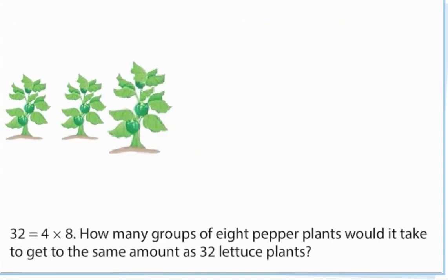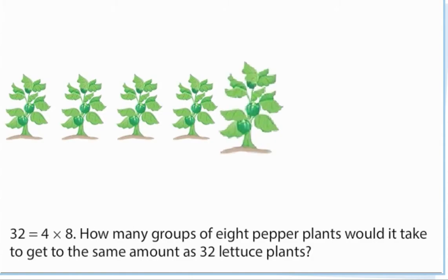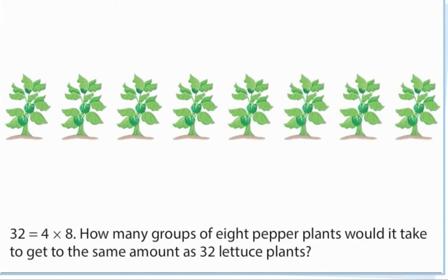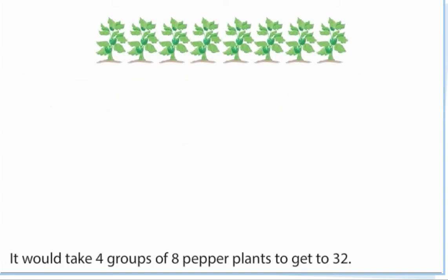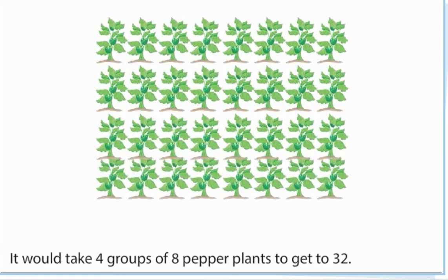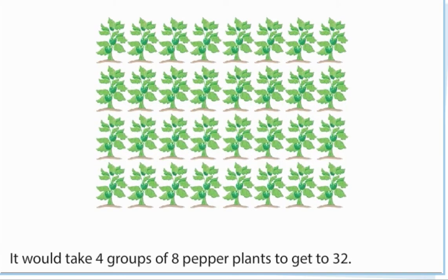How many groups of eight pepper plants would it take to get to the same amount as 32 lettuce plants? It would take four groups of eight pepper plants to get to 32.